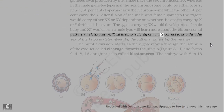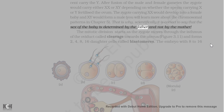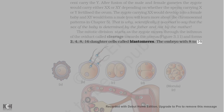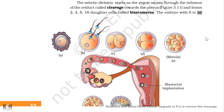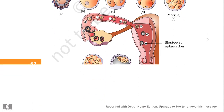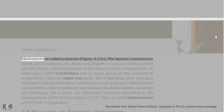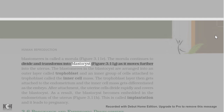Scientifically it is correct to say that the sex of the baby is determined by the father and not by the mother. The mitotic division starts as the zygote moves through the isthmus of the oviduct — called cleavage — towards the uterus and forms 2, 4, 8, 16 daughter cells called blastomeres. The embryo with 8 to 16 blastomeres is called a morula. The morula continues to divide and transforms into a blastocyst as it moves further into the uterus.